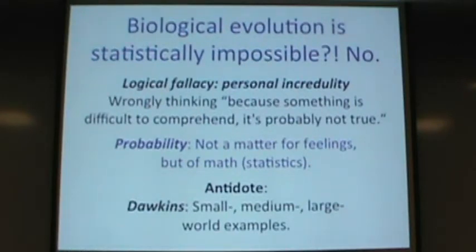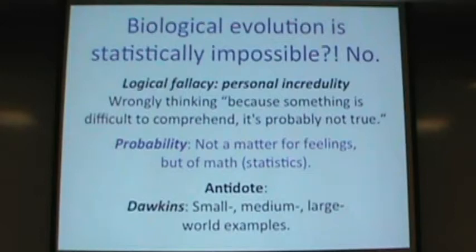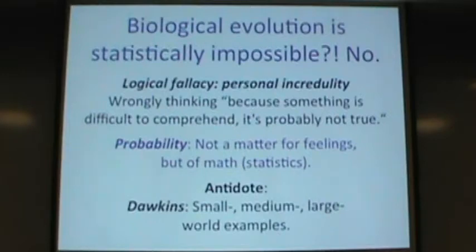Richard Dawkins makes a powerful point that we evolved to 'middle world' thinking — we understand three minutes and three miles, but if you say something is three light years, we don't really grasp it. Three light years or six light years all seems the same to us. Similarly, in computer work we're down to nanometers — a billionth of a meter — and we can't imagine that scale intuitively. We just zoom in using a zoom function.